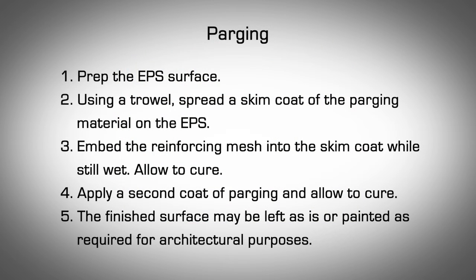Parging. Most building codes in North America require the exterior finish siding to start at a distance not less than 6 to 8 inches above grade level. The exposed EPS area between the grade and the exterior siding finish must be covered. A parge coat — a cementitious coat — is most often used to cover and protect the EPS from weathering. Before applying the parge coat, the EPS must be clean of any dirt or debris and dry to ensure proper adhesion. AMBIC recommends using Duroc Prep Coat B2000 with reinforcing fiber mesh or equivalent. The parging coat should overlap the damp proofing or waterproofing membrane by 2 inches.